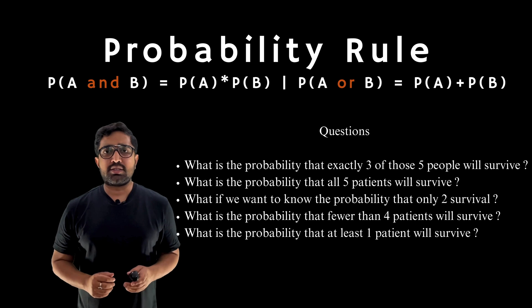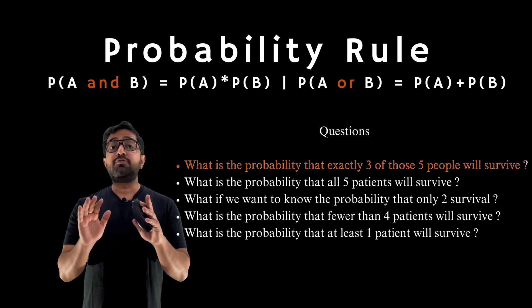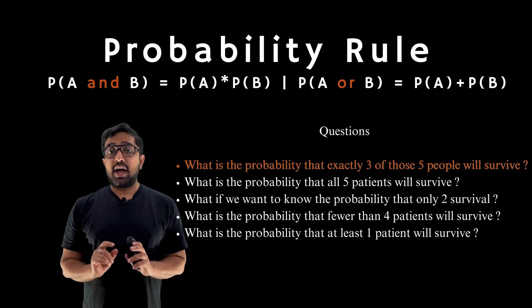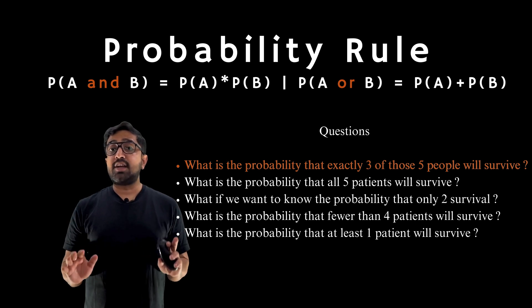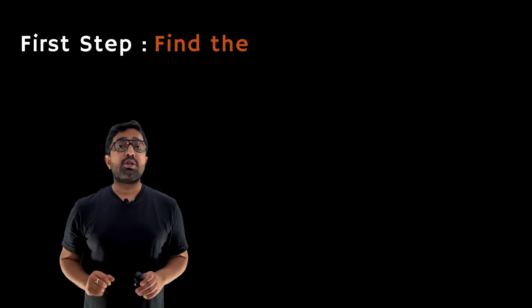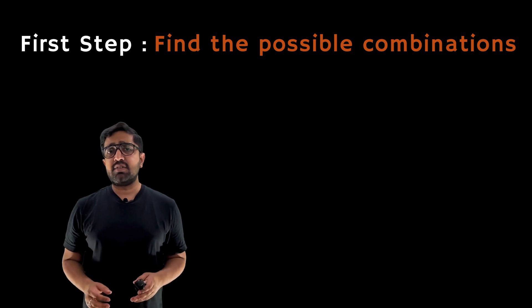Let's do the maths. For finding only 3 surviving out of 5 patients (and I suggest you solve for 2 surviving out of 5 patients), first step: find the possible combinations. We need to determine how many different ways we can choose 3 survivors from the 5 patients. These combinations could include any group of 3 from 5.